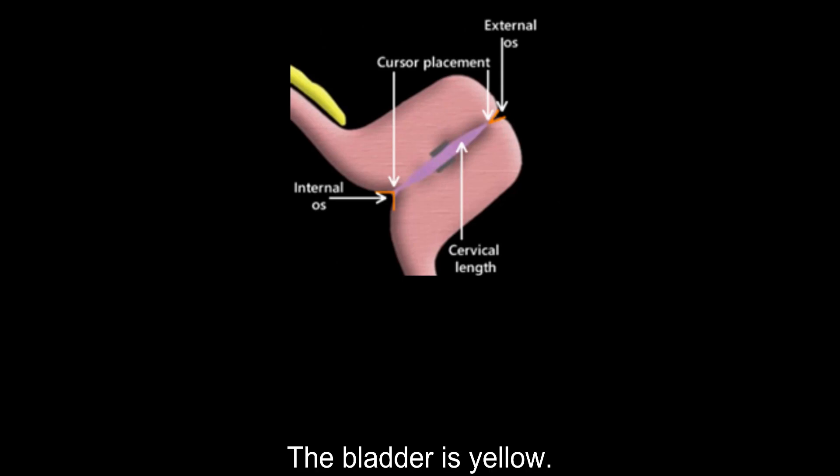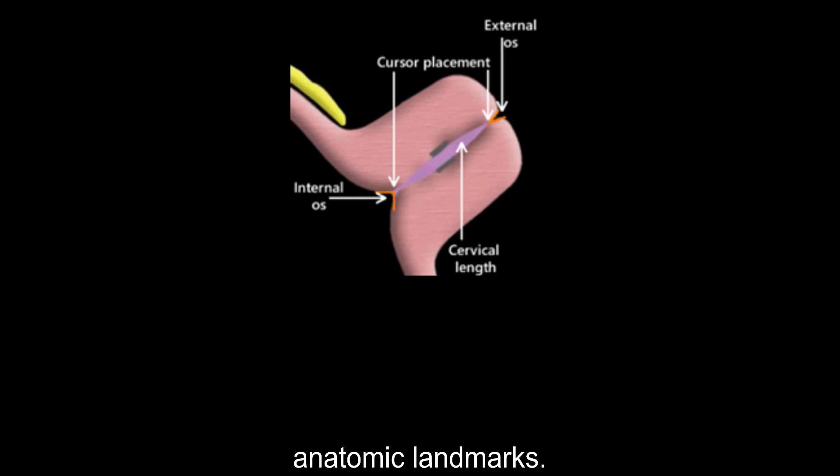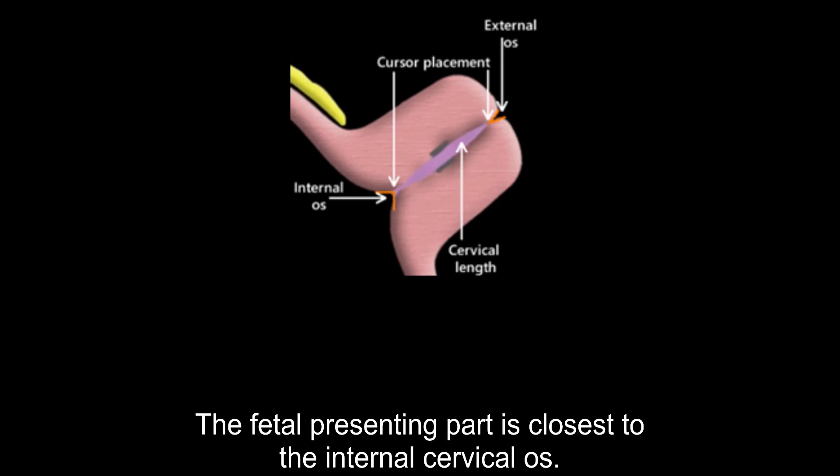The bladder in yellow, cervical canal, internal and external cervical os, and vagina are standard anatomic landmarks. The fetal presenting part is closest to the internal cervical os.